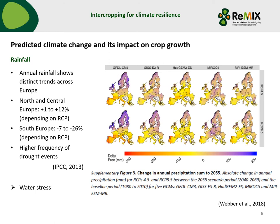The predicted rainfall shows a distinct trend across Europe. In north and central Europe there is an increase predicted between 1 and 12 percent. In the south of Europe there is a predicted decrease between 7 and 26 percent, and in general there is a predicted higher frequency of drought events, which can induce water stress to the crops during different phenological stages. Here again a graph for these different climate simulation models for two concentration pathways. The trend is more or less similar for the different simulation models, however the absolute values differ, so there is an uncertainty involved in this different predicted climate change.